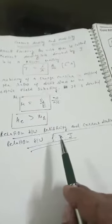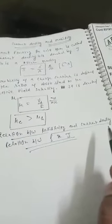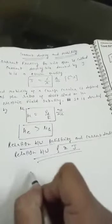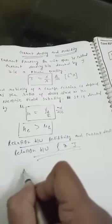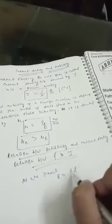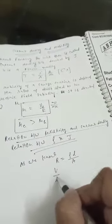Next topic: relation between resistivity and current density (rho and j). As we know, resistance R = ρl/A, and R can be written as R = V/I.